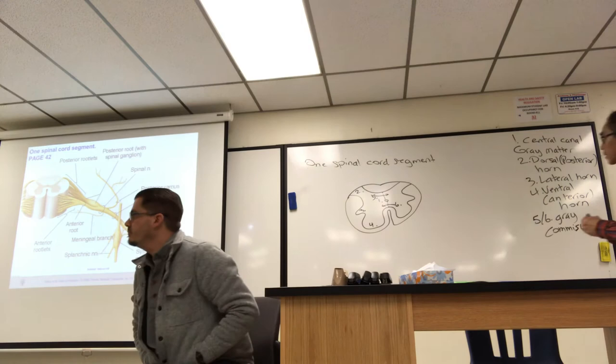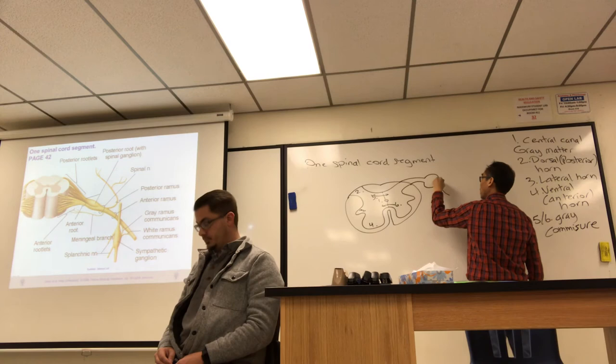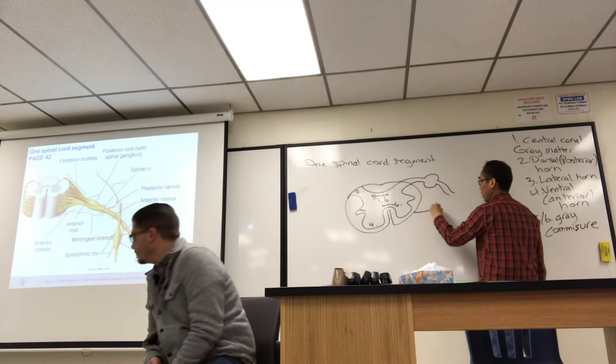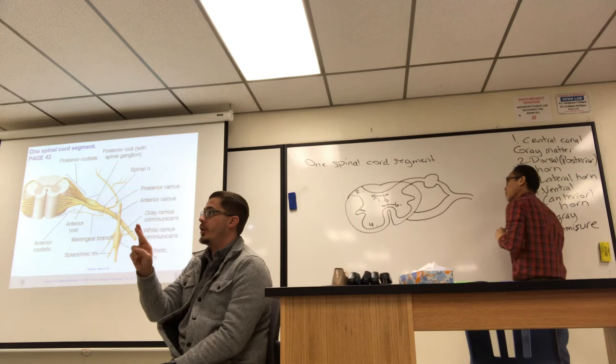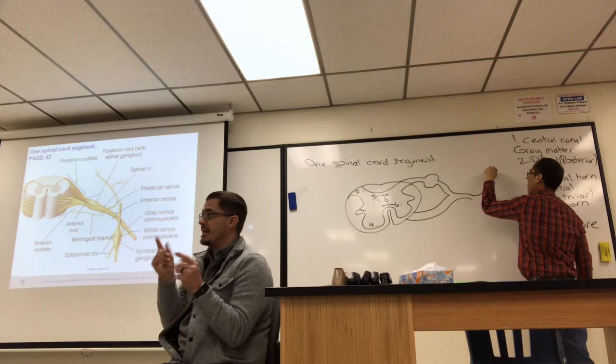There are also nerve roots coming off the spinal cord. Two nerve roots merge together to form the spinal nerve, which then immediately splits into two branches.